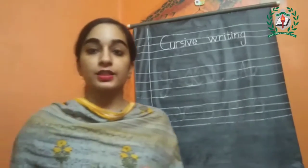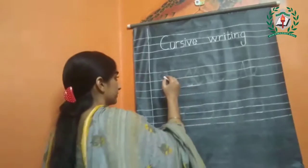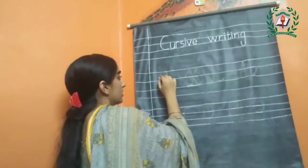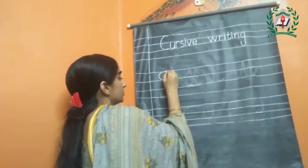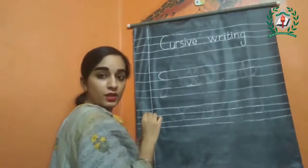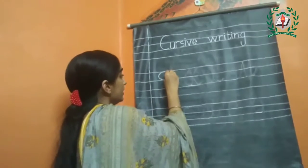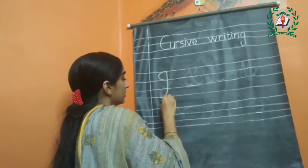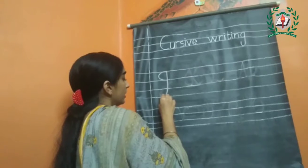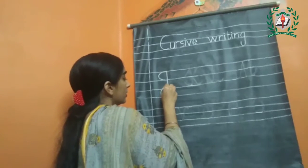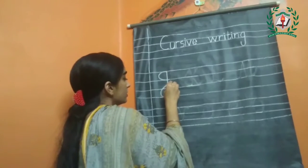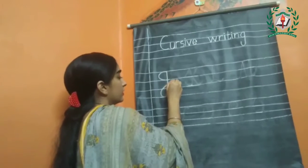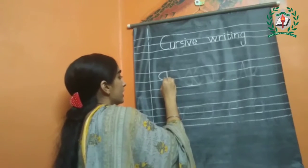The first letter is J. Start from the head line, make a curve touching to the upper line. Now make a standing line with a slight curve at end touching to the lower line, make a loop crossing to the baseline. This is the letter J.